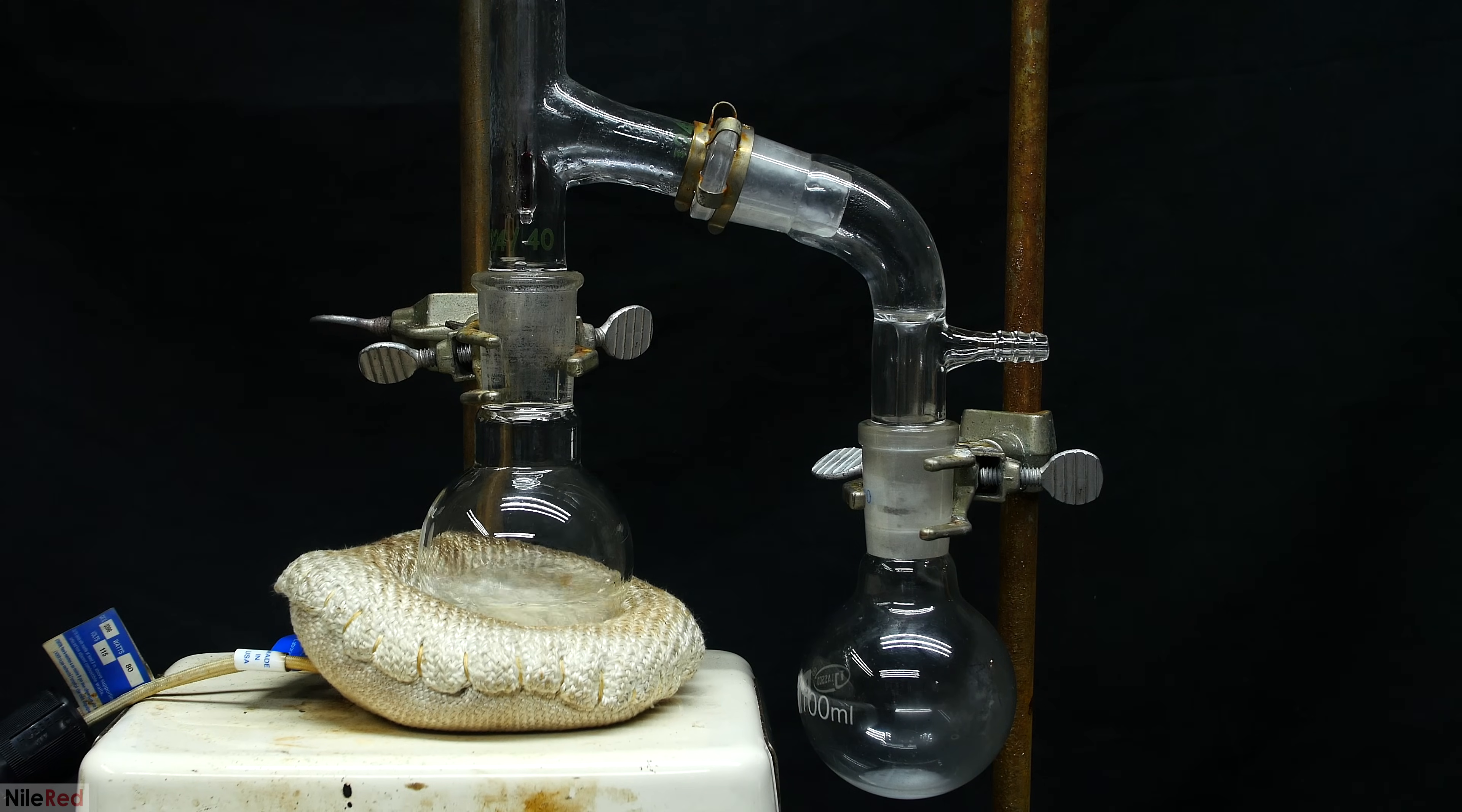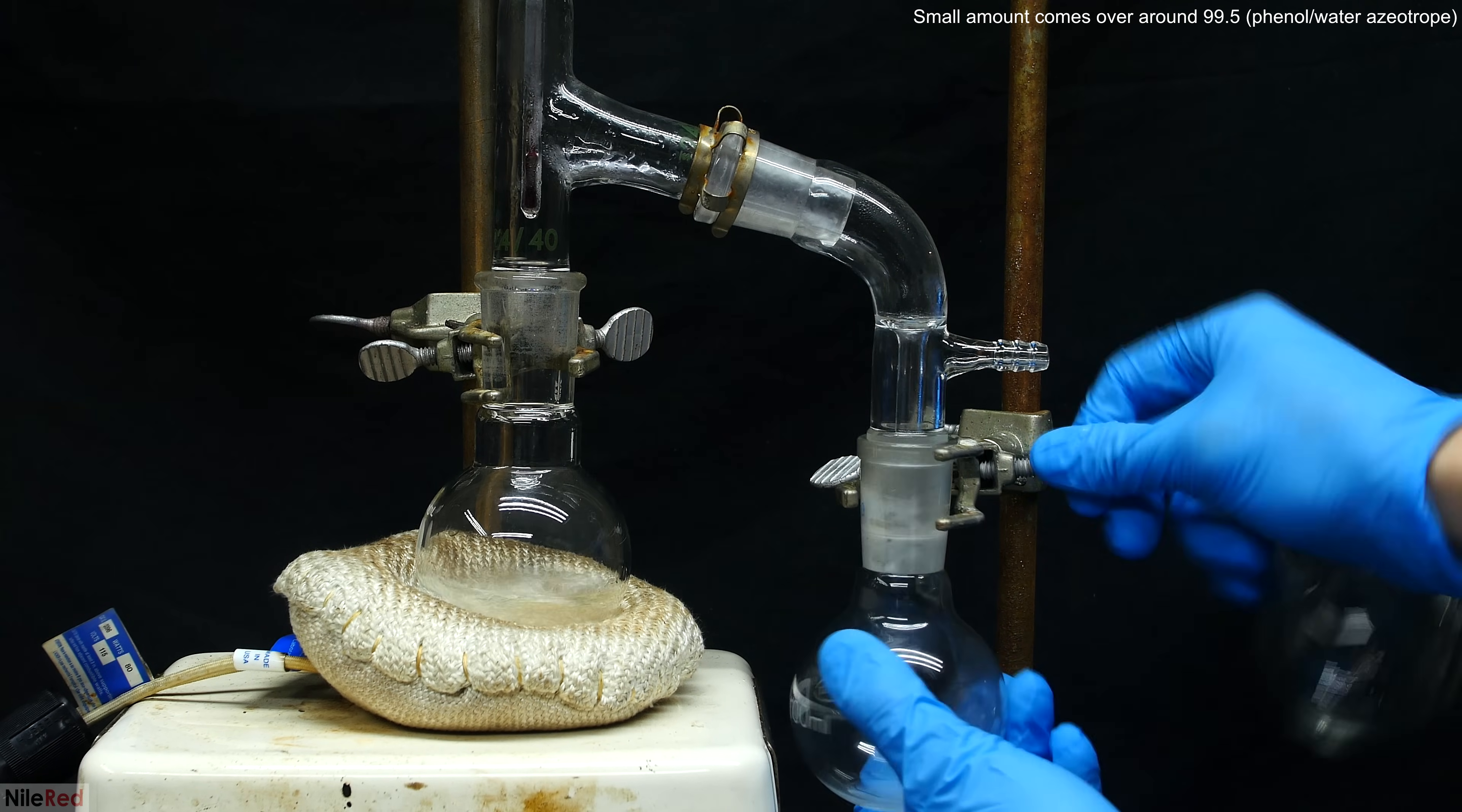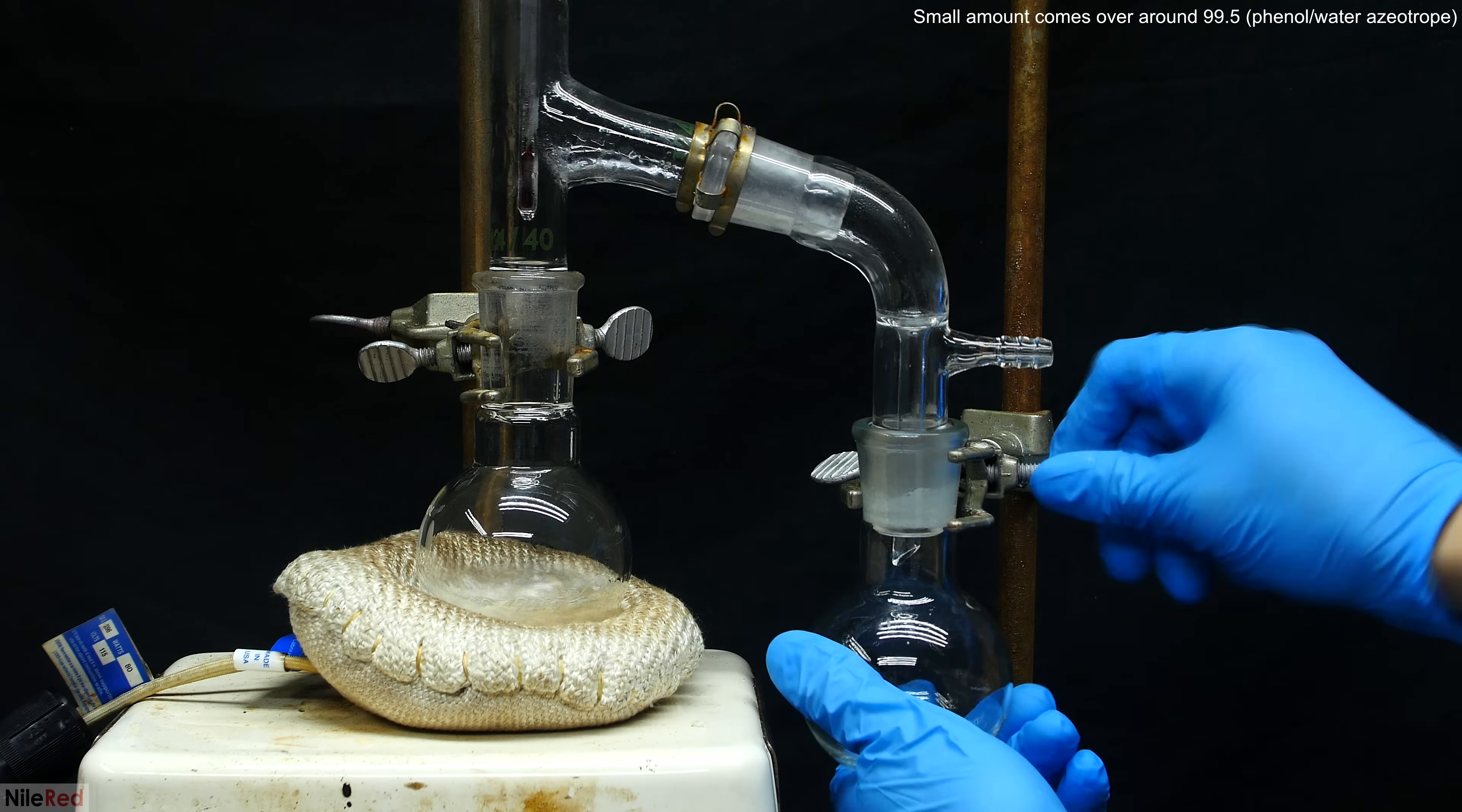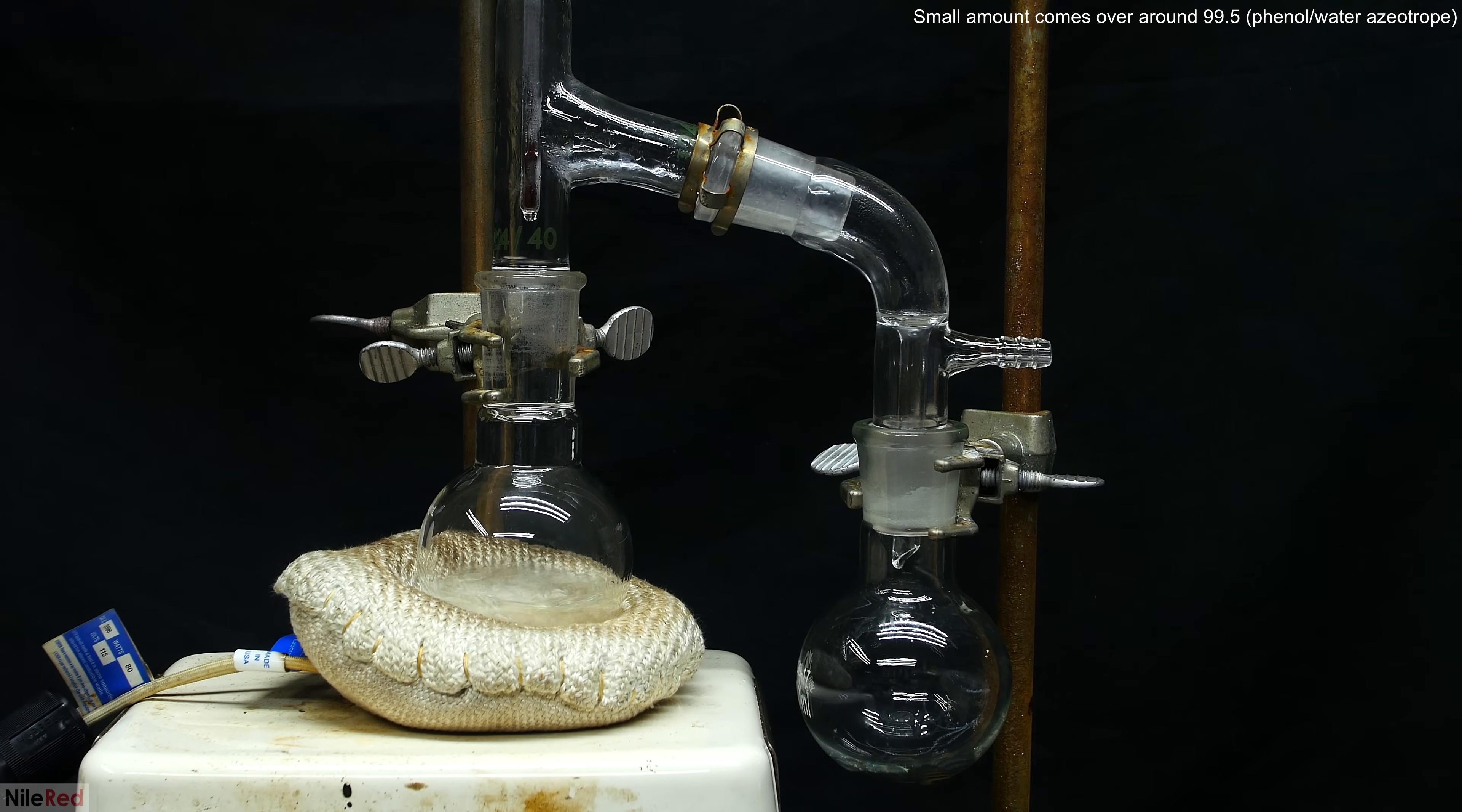This time, I decide to swap out the flask and discard whatever this impurity is. I did this a little bit too early though, and in the new flask, I was still collecting this junk. This really isn't a big deal though, and once I actually started to get crystal clear distillate coming over, I just swapped the flasks again.